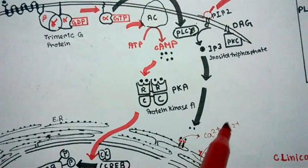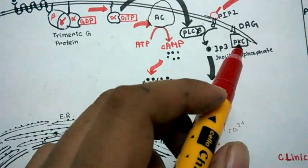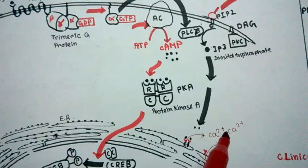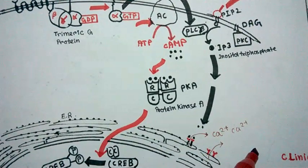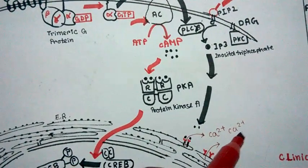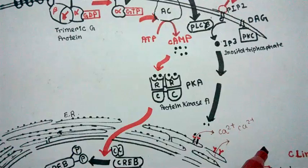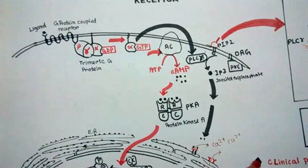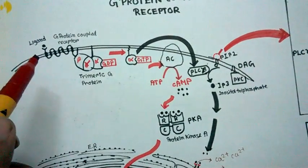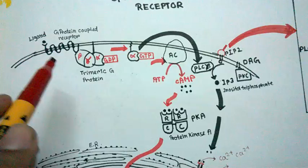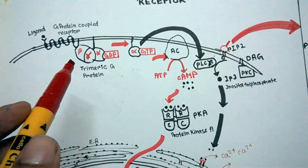This calcium ion can activate protein kinase C or bind to calmodulin kinase and impart its function. This G protein-coupled receptor signaling is essential for chemokine function.